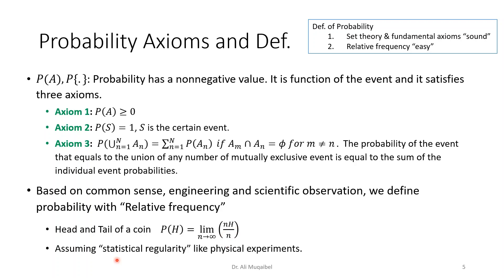Mathematically we can say it this way: the number of heads over the total number, and you take the limit as n approaches infinity, which means you have to repeat the experiment forever to get the exact number. Of course, for this experiment to be true, we should assume that we have statistical regularity, which means that there are no other factors that control the outcome.